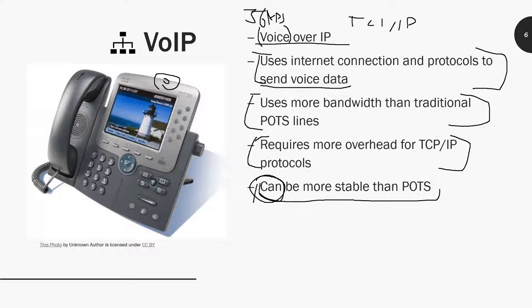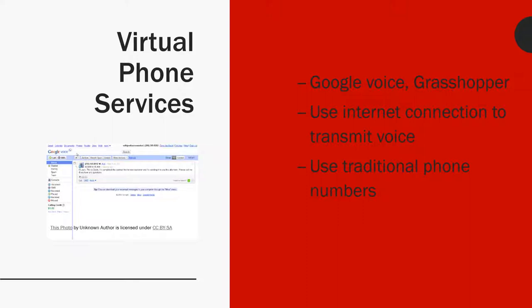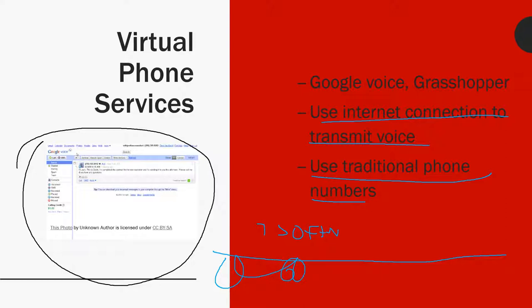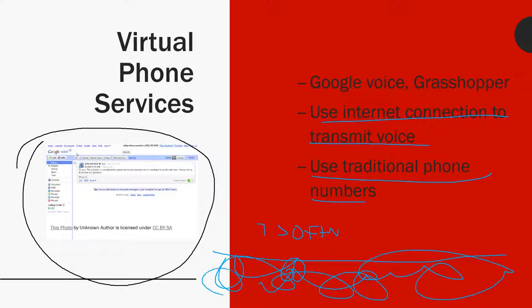Carrying on to virtual phone services. I used a Google Voice screenshot here because it's a great example. This is more software-based, but you do get a traditional phone number, and it uses the internet to transmit voice. This operates at the software level — think of it as Layer 7. The underlying infrastructure is abstracted away like a big cloud.